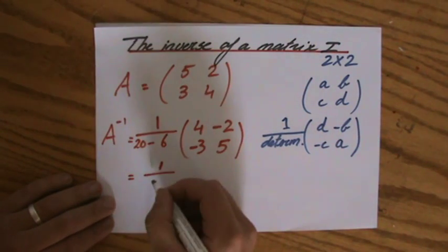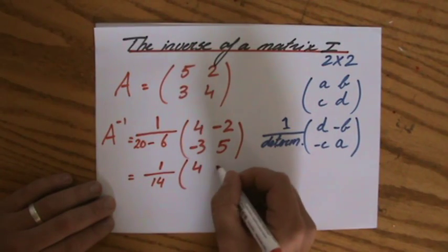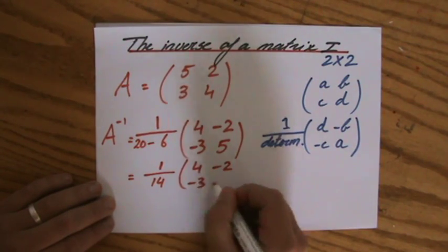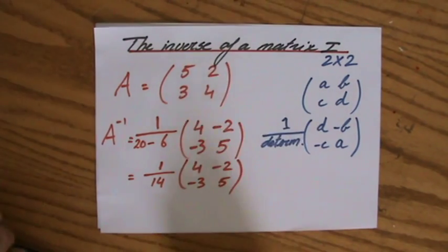20 minus six. That will be 14. And I already swapped and changed the signs of those pieces of information. There we go.